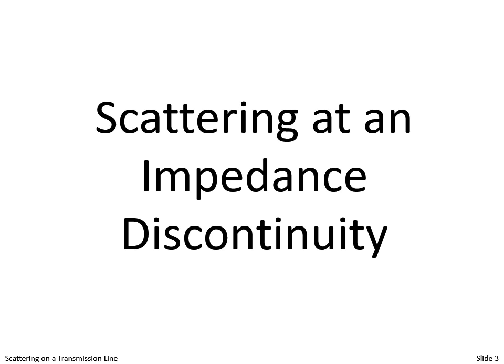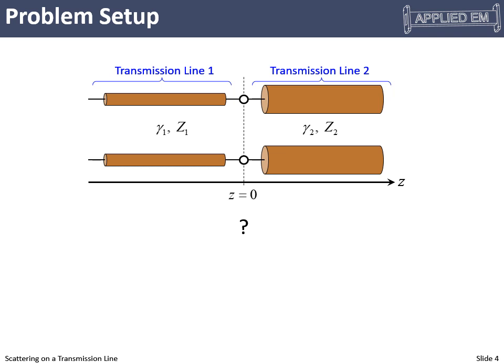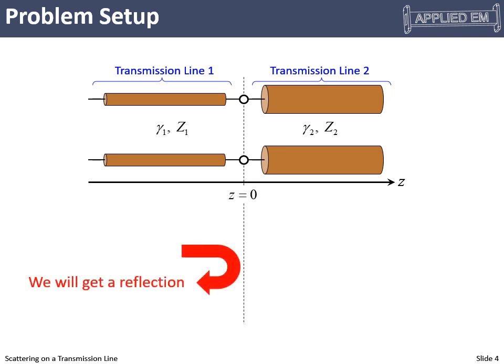Scattering at an impedance discontinuity. This is a common cartoon for a transmission line. While it seems to imply some kind of parallel wire transmission line, it's really representing any transmission line — this could be a microstrip, a coaxial cable, or anything else. We characterize a transmission line with a complex propagation constant and a characteristic impedance. The question is: what happens when we connect a transmission line with one set of parameters and butt it up against a transmission line with another set of parameters? It should be no surprise that we will get a reflection. Let's derive an expression for the reflection coefficient.